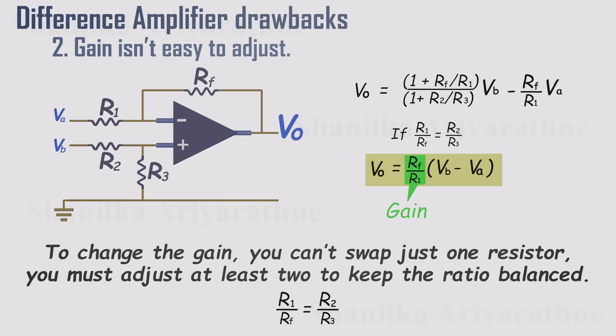Here's the catch. If you want to change the gain, you can't just replace one resistor, like Rf or R1. To keep the ratios balanced, you have to adjust at least two resistors together. That's awkward and inconvenient. It would be much better if we could control the gain by adjusting just a single resistor.